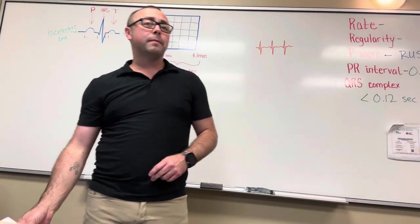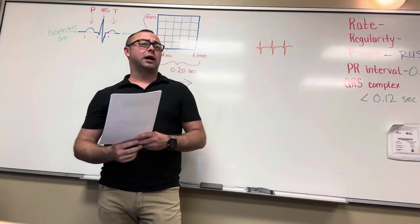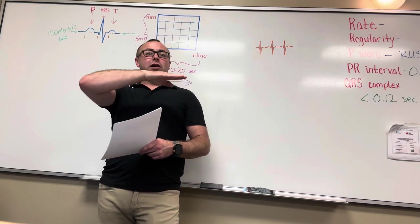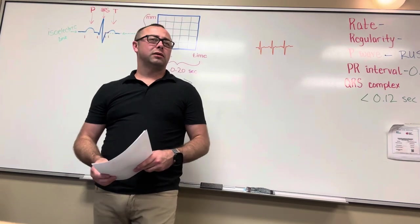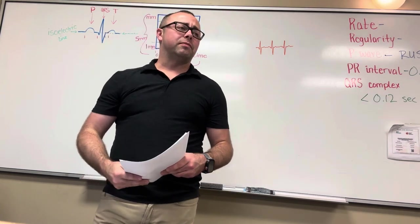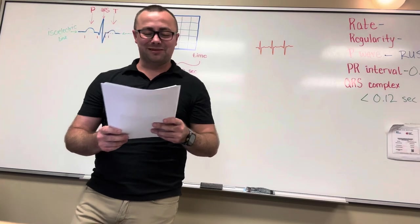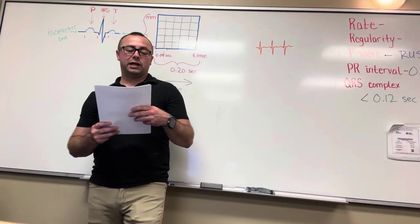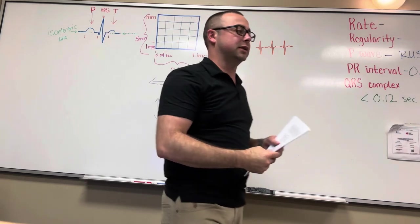When we say rounded, it's hard to get an EKG machine to print a perfectly rounded P wave. It may look just a little bit pointed, or like a little plateau at the top where it's kind of flattened out. These strips have been printed and copied multiple times, so they may not look as clear. Our P waves are RUSA on this one.